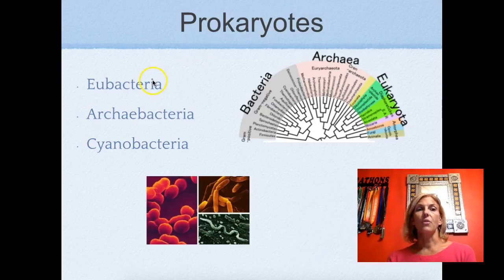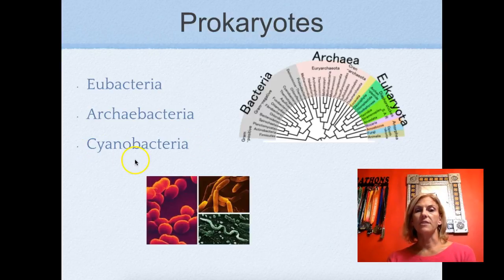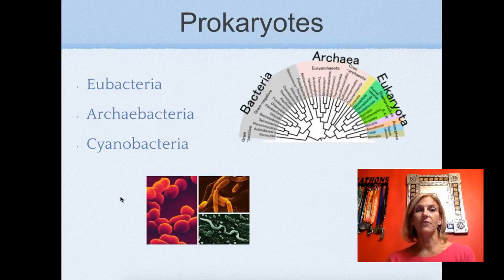We're going to talk about the eukaryotes, the archaebacteria, and the cyanobacteria when we talk about prokaryotes. Cyanobacteria are those blue-green algae, and most likely our oxygen in the atmosphere first came from cyanobacteria many many years ago.